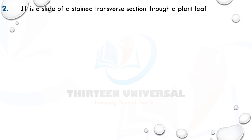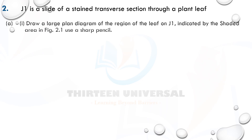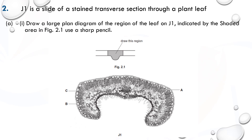The first question we're looking at: J1 is a slide of a stem transverse section through a plant leaf. The slide is to be used to answer questions. It says draw a sharp plan diagram of the region of the leaf on J1 indicated by the shaded area in Fig 2.1. You must use a sharp pencil.